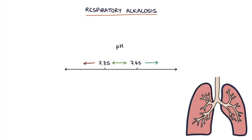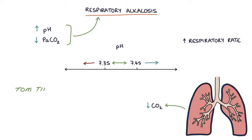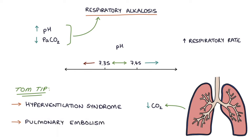Next, let's talk about respiratory alkalosis. Respiratory alkalosis occurs when a patient has a raised respiratory rate and blows off too much carbon dioxide, resulting in a high pH and a low PaCO2. A Tom tip: the most common exam scenarios for respiratory alkalosis are hyperventilation syndrome (e.g., due to anxiety) and pulmonary embolism. Patients with a PE will have a low PaO2 and be hypoxic, whereas patients with hyperventilation syndrome will have a high PaO2.